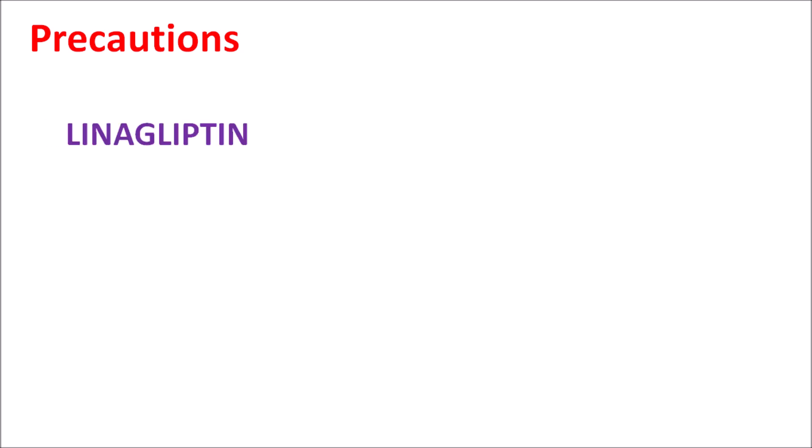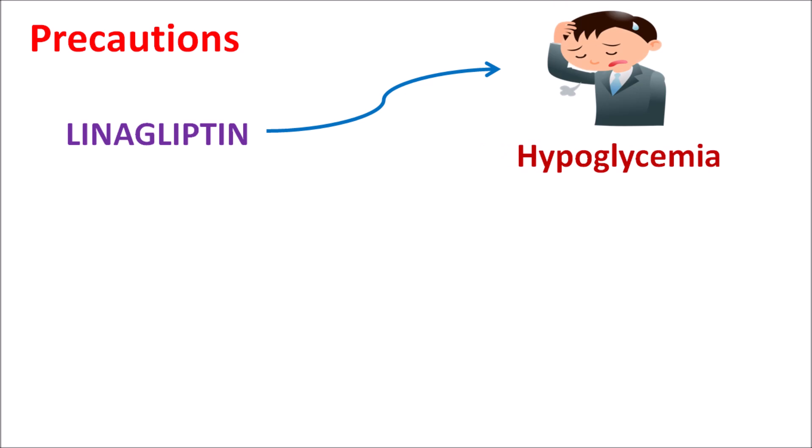Now let us look at the precautions of this drug. One of the important precautions of linagliptin is that this drug can produce hypoglycemia. Since this drug increases insulin secretion, which reduces blood glucose levels, linagliptin can produce hypoglycemia as an important side effect that should be carefully monitored.